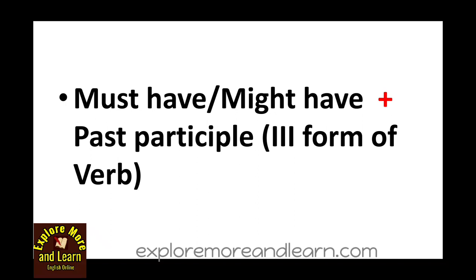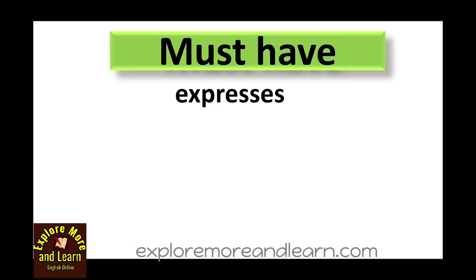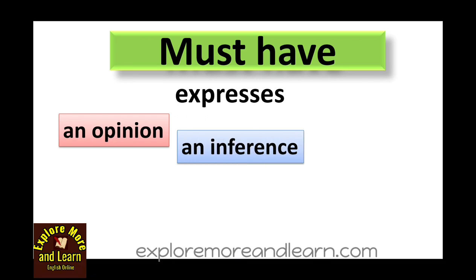For example: go, went, gone — so you use 'gone' with must have and might have. Similarly, sleep, slept, slept — you use 'slept,' the third form of the verb, along with must have and might have. We always use the third form of the verb, that is the past participle, along with must have and might have, just as we do in the perfect tense.